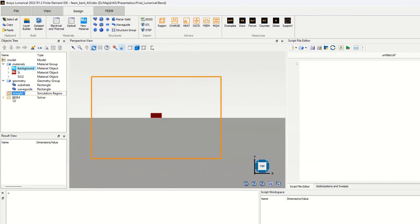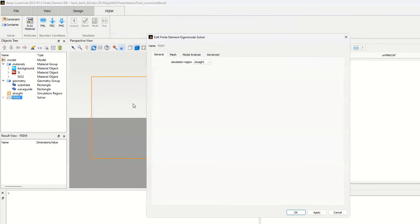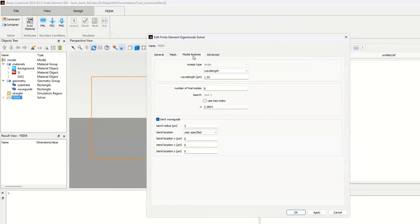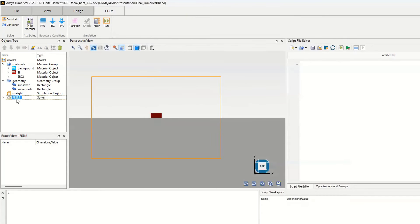For the solver settings, we chose the simulation region as straight. We will keep the mesh setting by this parameter - we increased a little bit the order of polynomial to increase the accuracy of the simulation. Let's disable the bend because we want to just simulate the straight waveguide first, and we want to choose the wavelength of 1.55. Let's apply, and by this button we can run the simulation.